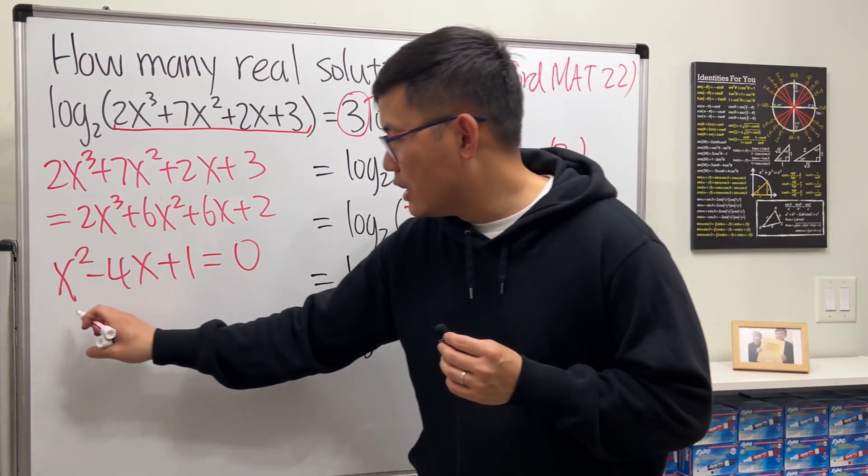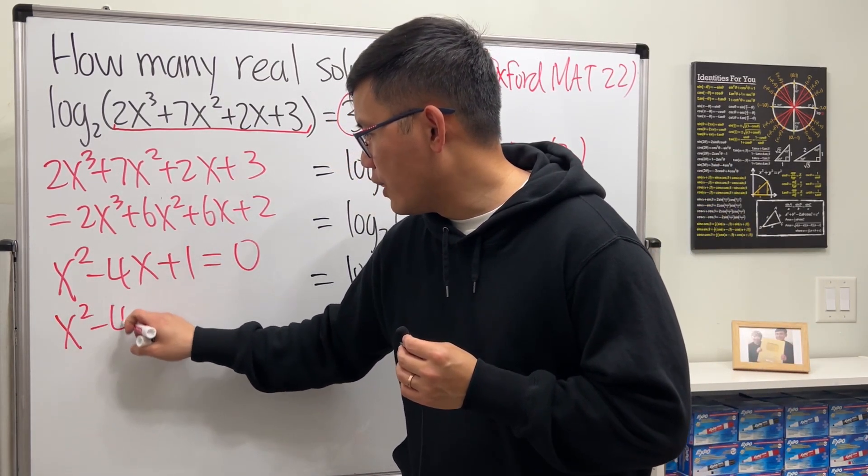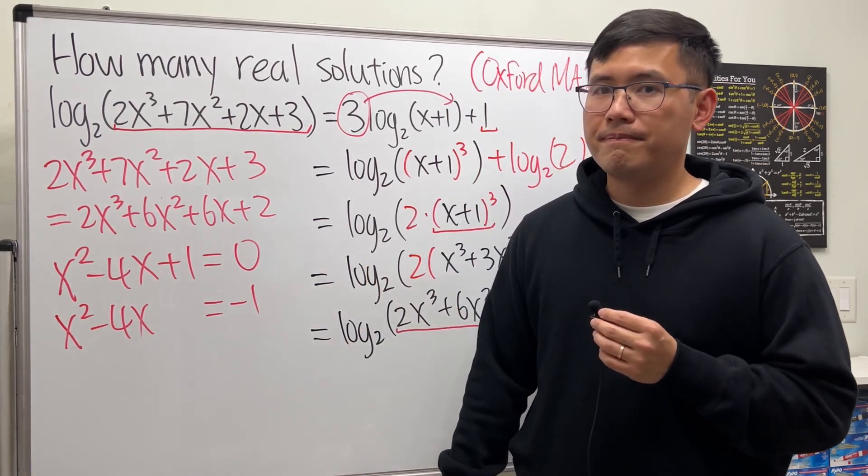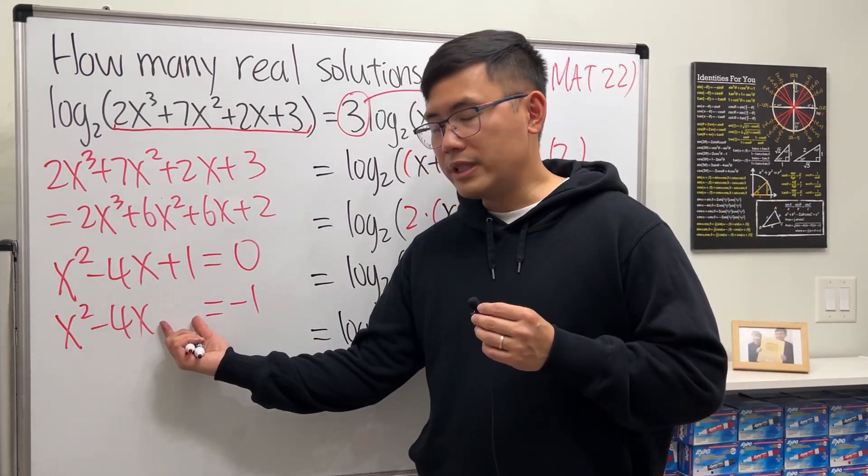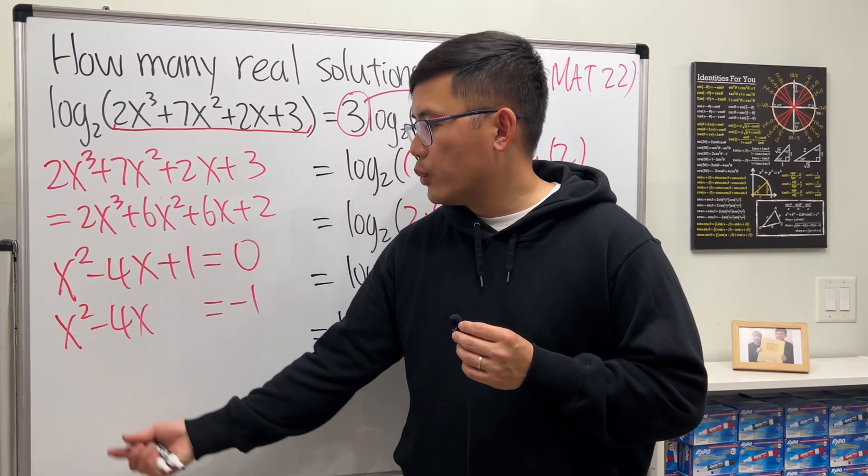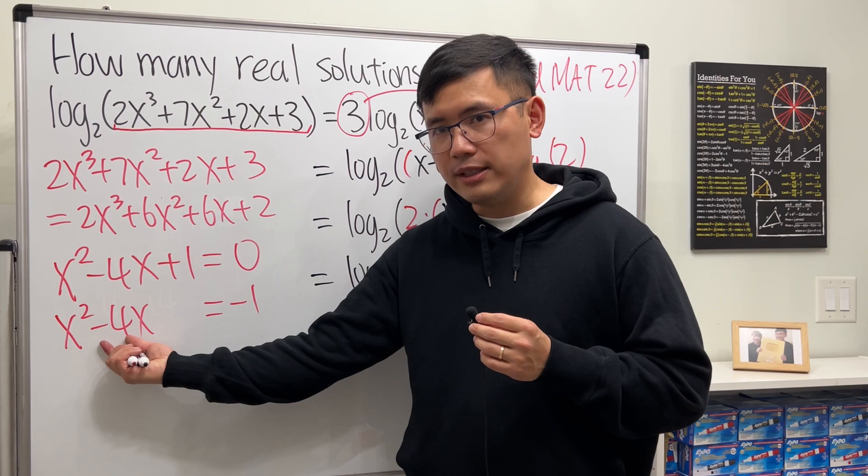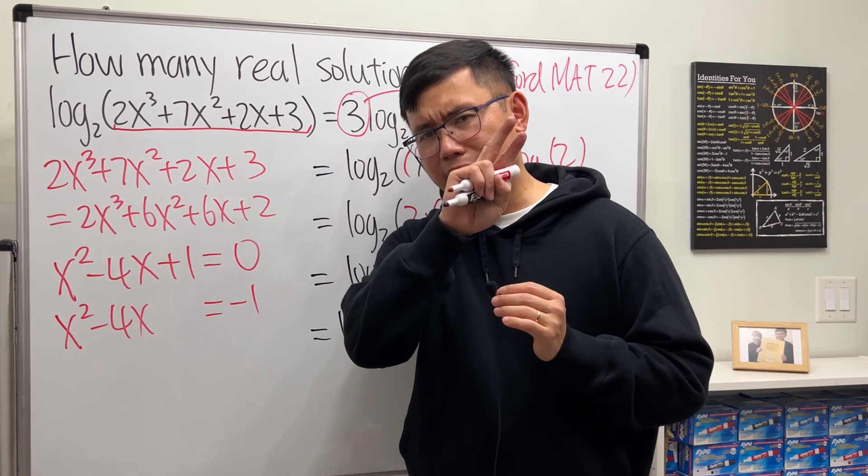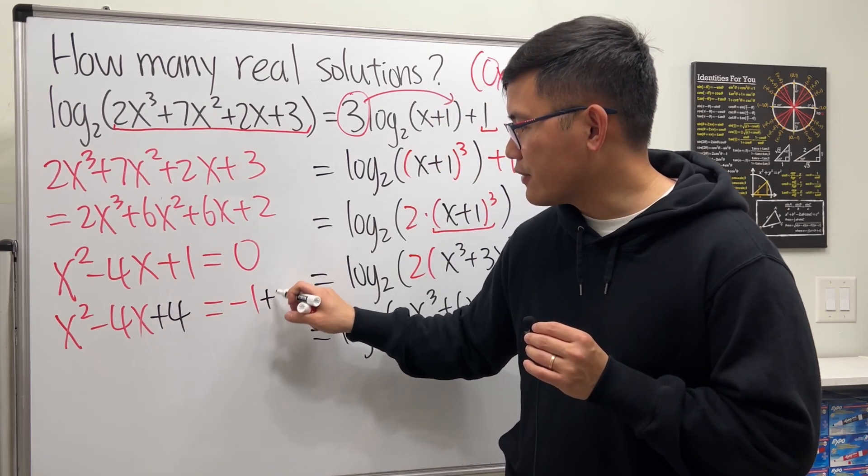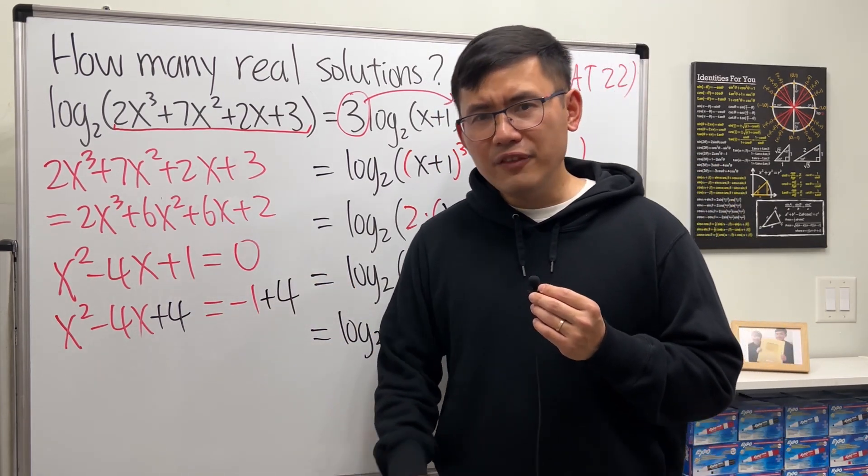Move the 1 to the other side, we get x² - 4x, leave a space, and make it equal to -1. What number do we have to add? Well, since this is 1 already, we take half of this which is -2, square that we get 4. So here we add 4, likewise here we add 4.